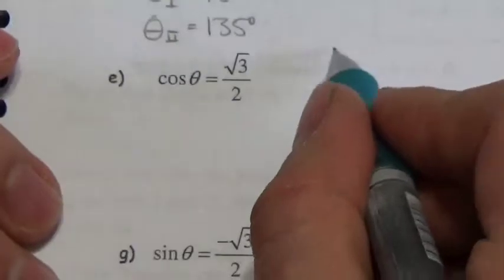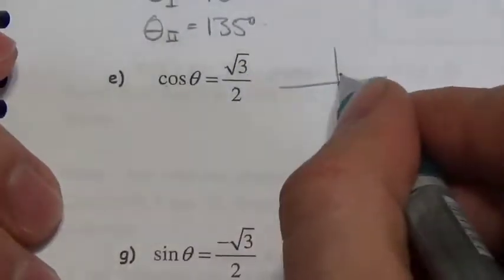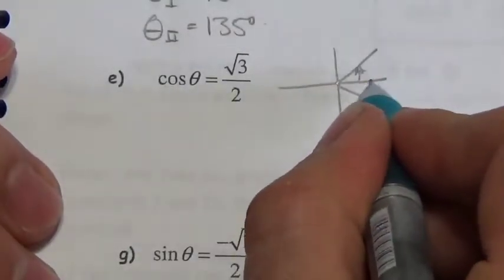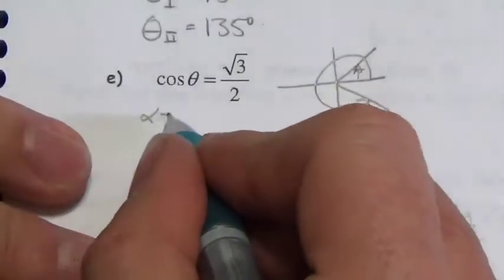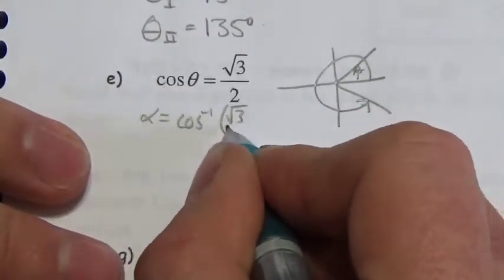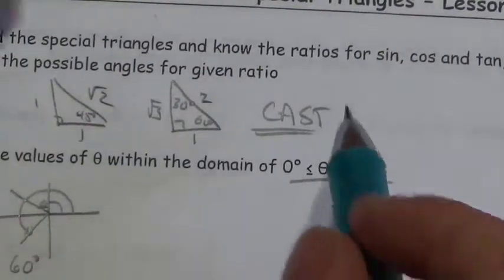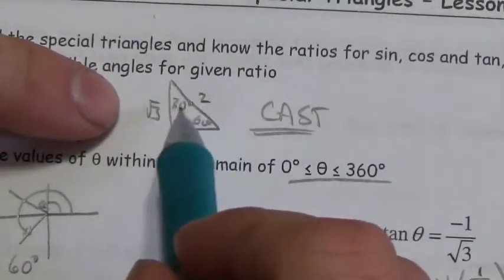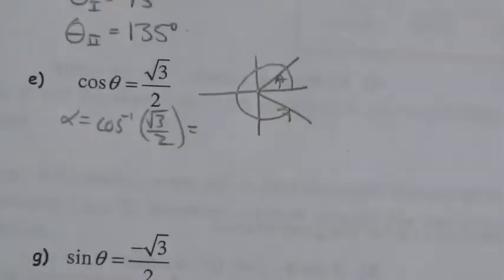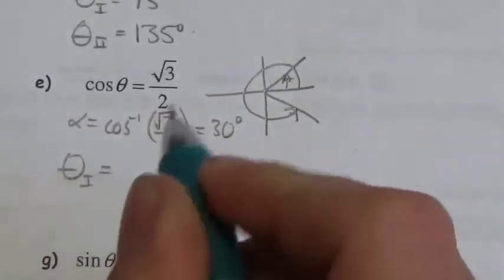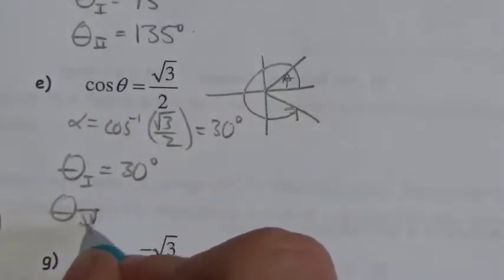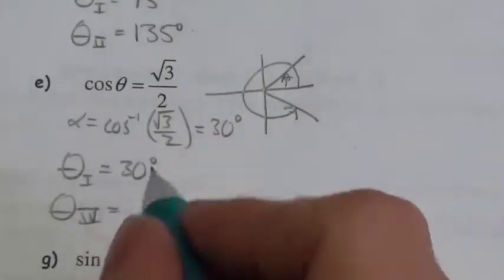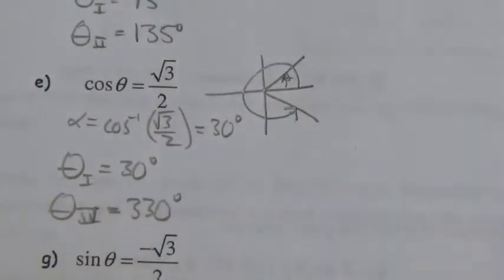Cosine of theta equals root 3 over 2. Cosine is positive in quadrants 1 and 4. Looking at the triangle, I need root 3 to be the adjacent side — that's the 30-60-90 triangle, making the angle 30 degrees. In quadrant 1, theta is 30 degrees. In quadrant 4, wrapping almost all the way around: 360 minus 30 equals 330 degrees.